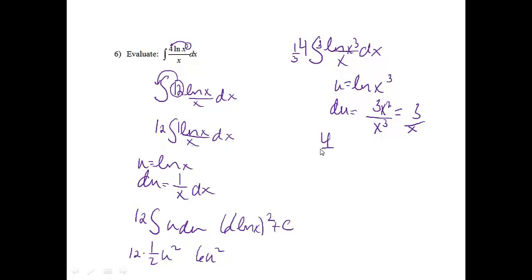So just kind of hang with me. It's going to look different than that answer, but that's okay. So I'm going to have 4 thirds the integral of u du once again. And then here I would have had 4 thirds times 1 half u squared. And then that would end up being 2 thirds u squared. And that would have ended up being 2 thirds ln x cubed squared.